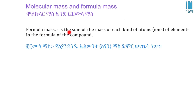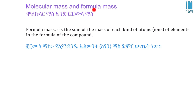Formula mass is the sum of the mass of each kind of atom or ion of the element in the formula of the compound. Formula mass is used when the compound includes ions, and it corresponds to the molecular mass for molecular compounds.